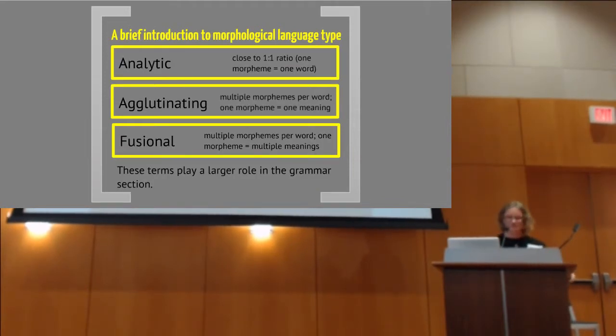And then finally, we talk about the differences between, say, analytic, agglutinating, and fusional languages, which is going to be a lot more important when we get to grammar. But it is still important when we talk about developing words. Because if you're going to have, say, an analytic language, maybe all your compounds are going to have these single morphemes separated out side by side, but then work together still as an overarching compound versus agglutinating, putting them all together with having each morpheme having its own distinct meaning.